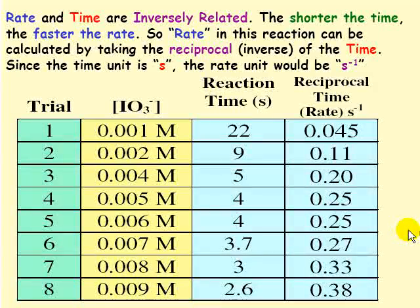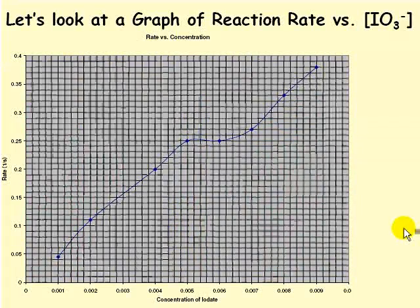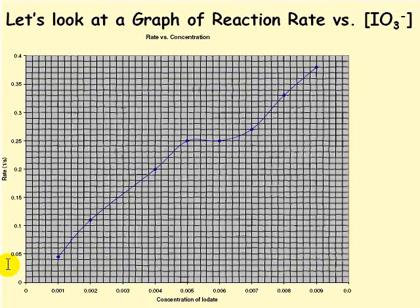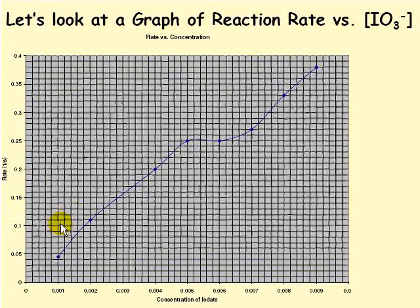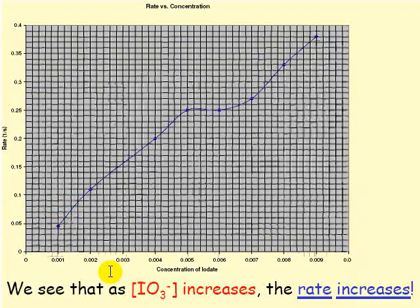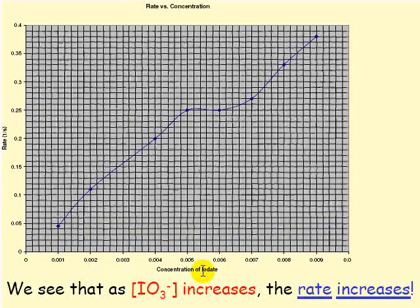Now we'll look at the results on a graph. Here's the concentration of iodate on this axis, and this is the rate, which is reciprocal time on this axis. So you can see that as the concentration of IO3- increases, the rate generally increases too.